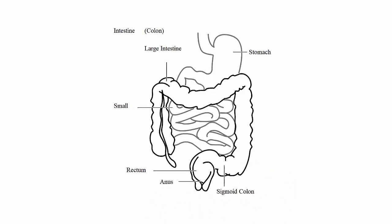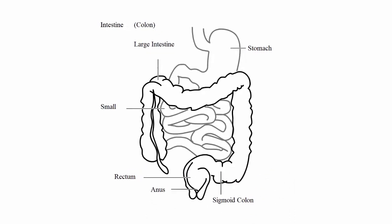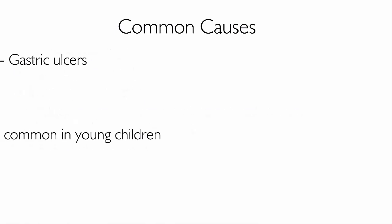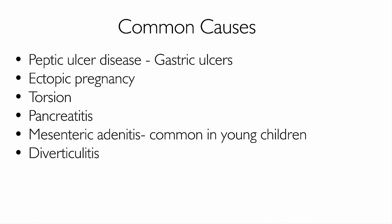When a patient presents to the emergency department with an acute abdomen, the main goal is to identify if the cause is of a serious nature or not. Common causes include acute appendicitis, renal or ureteric colic, intestinal obstruction, strangulated hernias, acute cholecystitis, peptic ulcer disease, gastric ulcers, ectopic pregnancy, torsion, pancreatitis, mesenteric adenitis (common in young children), and diverticulitis. Each of these conditions will be discussed in separate videos.